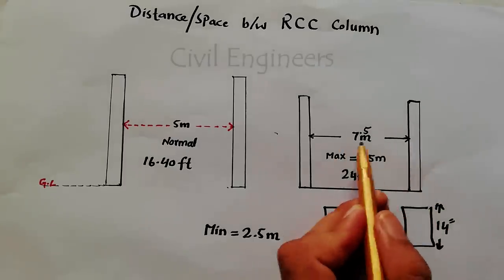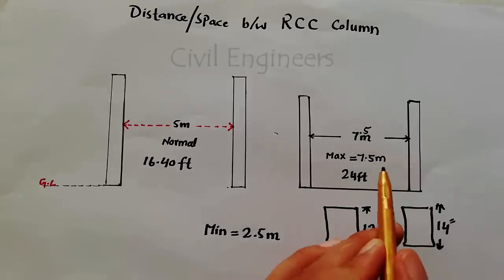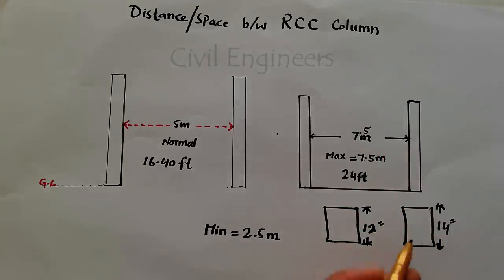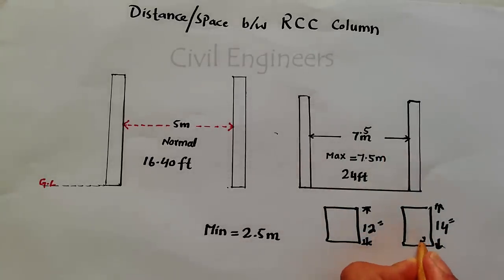When you increase distance between two columns, then you will also increase depth of the column and cross section.